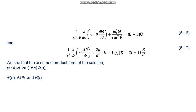In solving these equations we find that the equation for Phi(phi) has acceptable solutions only for certain values of m_l. Using these values of m_l in the equation for Theta(theta), acceptable solutions are found only for certain values of l. Using these values of l in the equation for R(r), this equation has acceptable solutions only for certain values of the total energy E — that is, the energy of the atom is quantized.